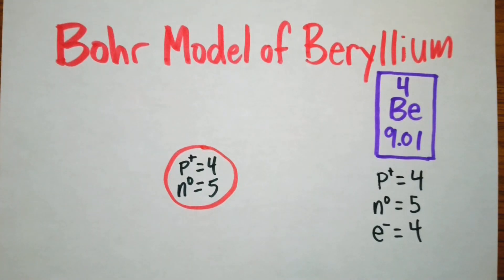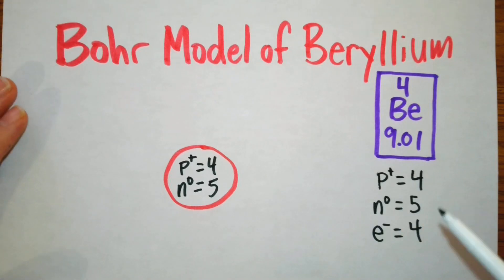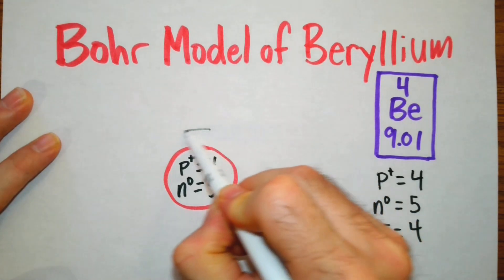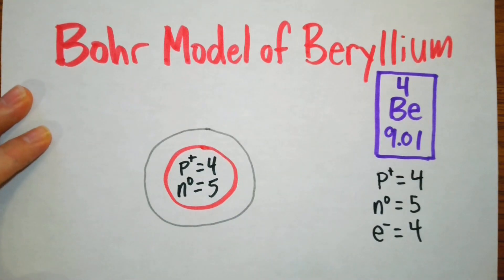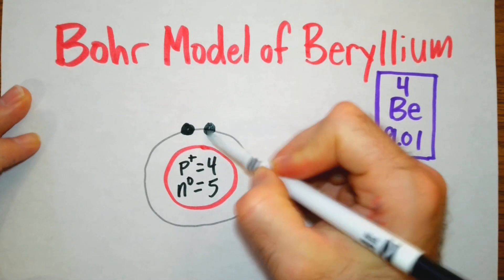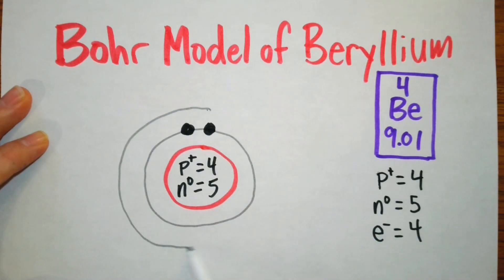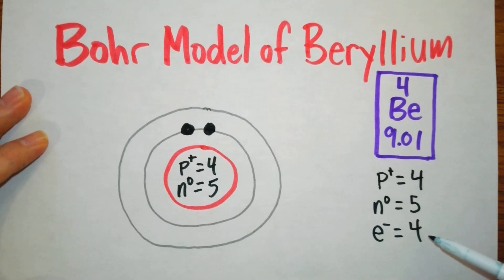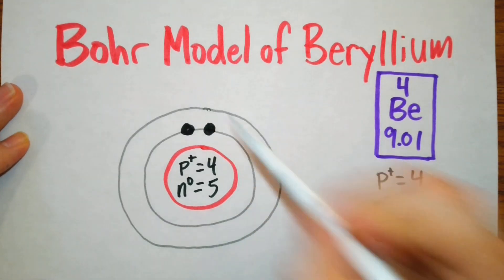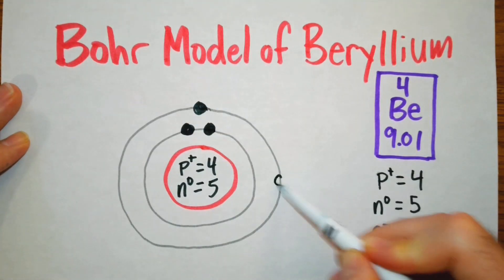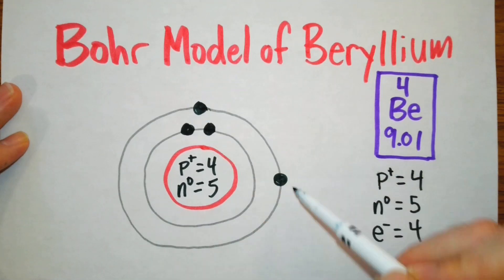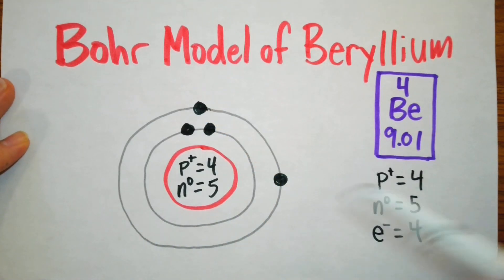We have four electrons, so we're going to start from the innermost electron shell — the innermost electron orbit. This one can hold a maximum of two, so we're going to put one, two electrons here. Now we need a total of four electrons. That first shell is full, so we're going to need another orbital. This one can hold a maximum of eight, but we have four already placed, so we need two more. We put one here and one here, because they're not going to pair until at least the fifth electron in orbitals two and three.